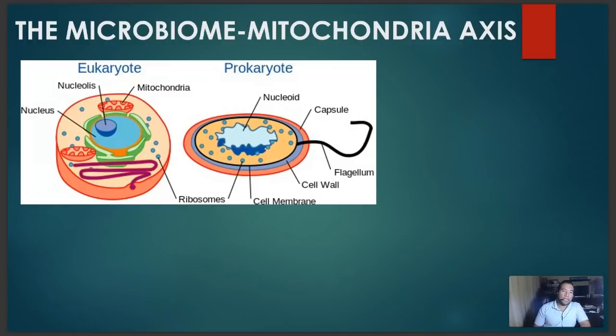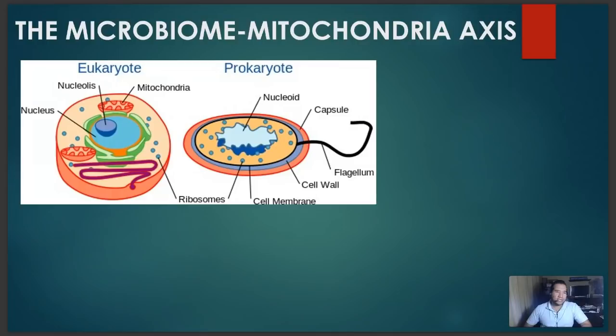To understand the relationship, it's important to review what a eukaryotic cell is versus a prokaryotic cell. We are made up of eukaryotic cells — multicellular organisms are typically made up of eukaryotic cells. These cells are far more complex and larger. They have a nucleus, nuclear membrane, ribosomes, different organelles, and they contain mitochondria, which is the powerhouse of the entire cell. A eukaryotic cell can contain anywhere from 4 to 2,400 mitochondria in a single cell.